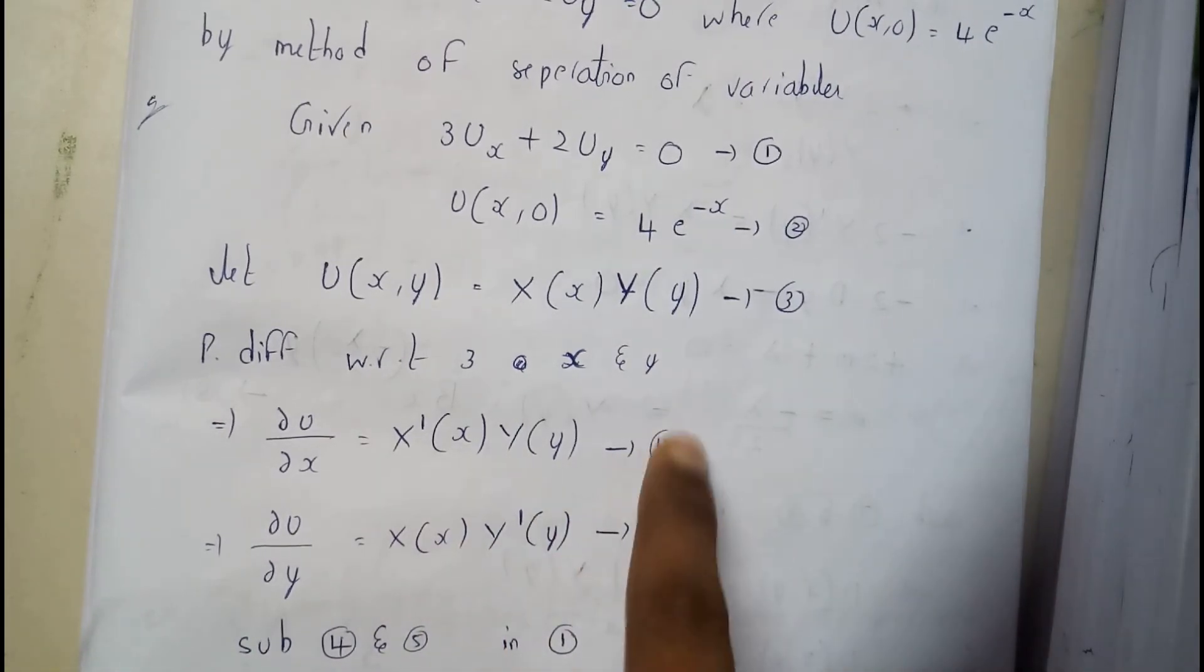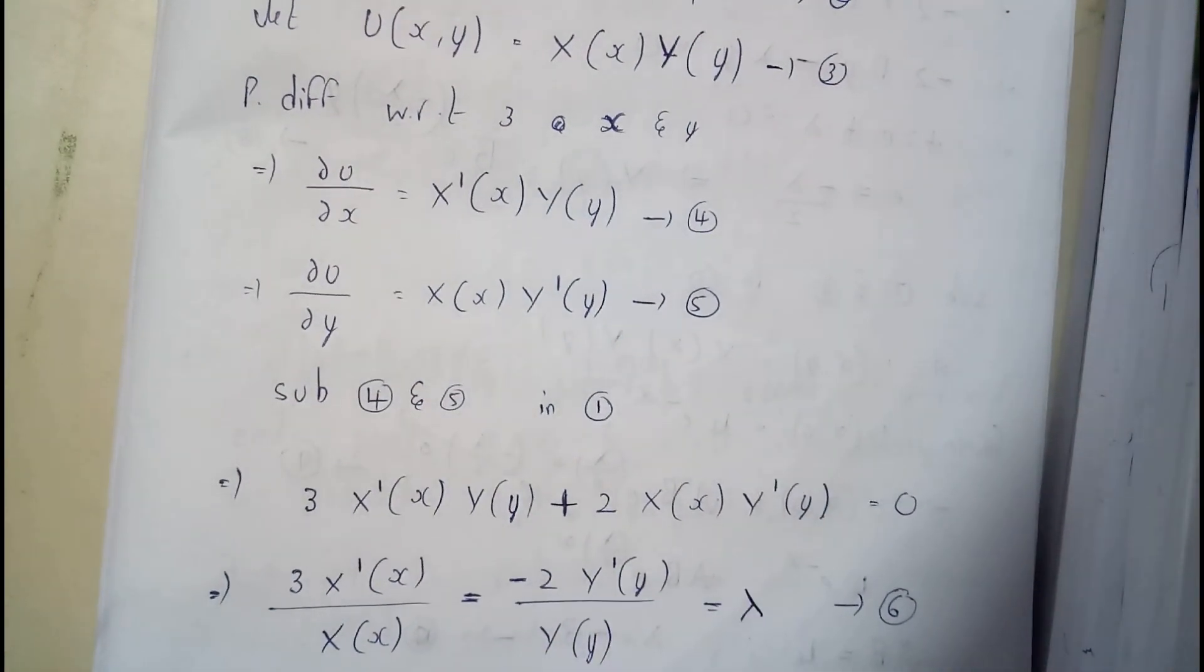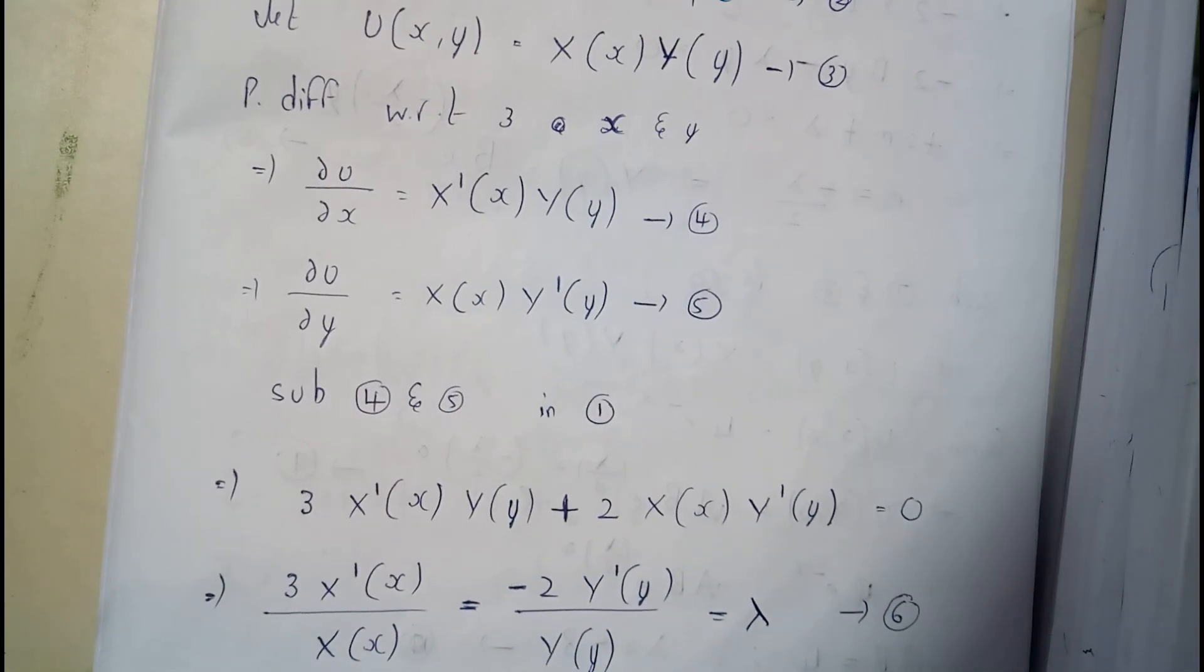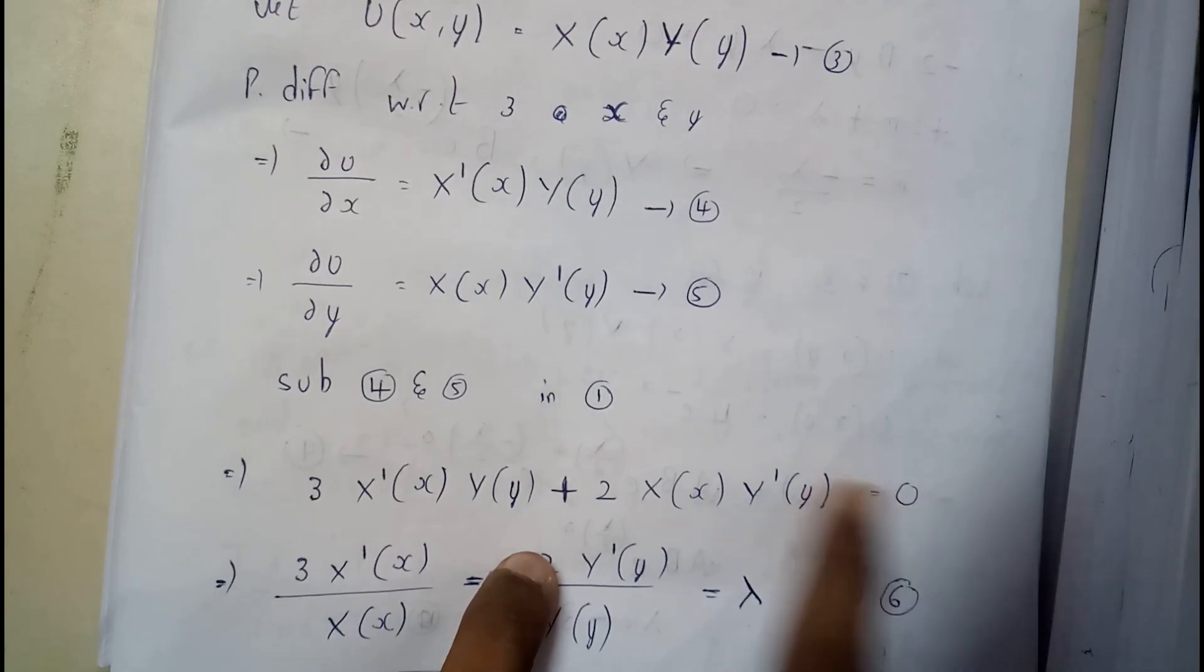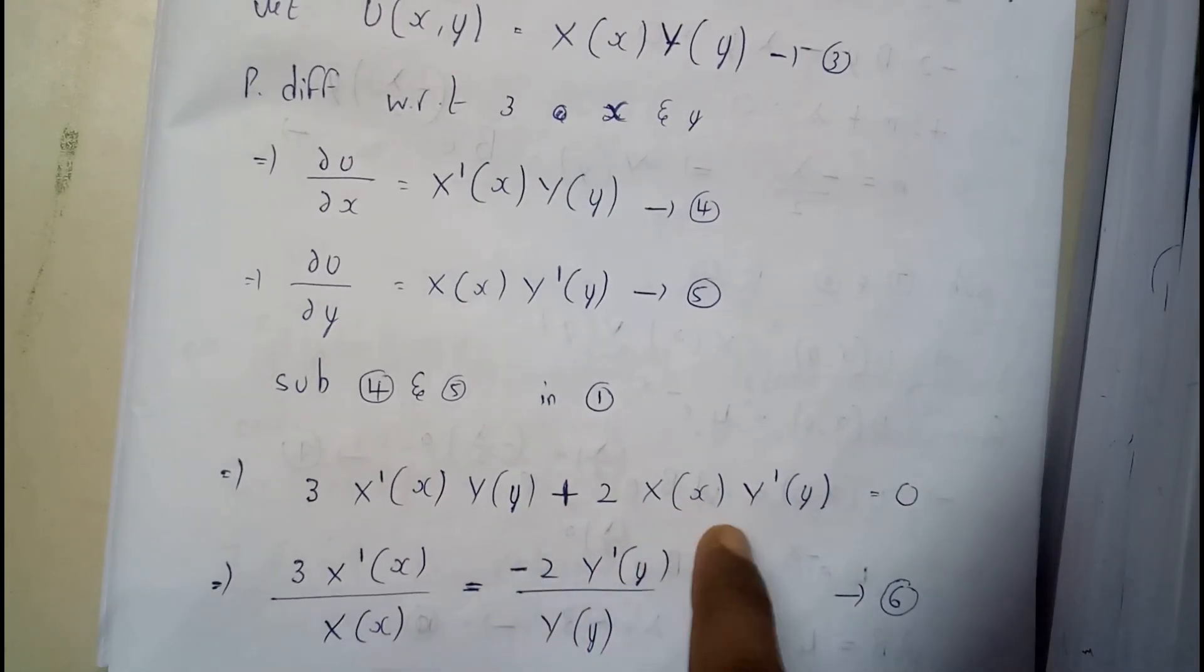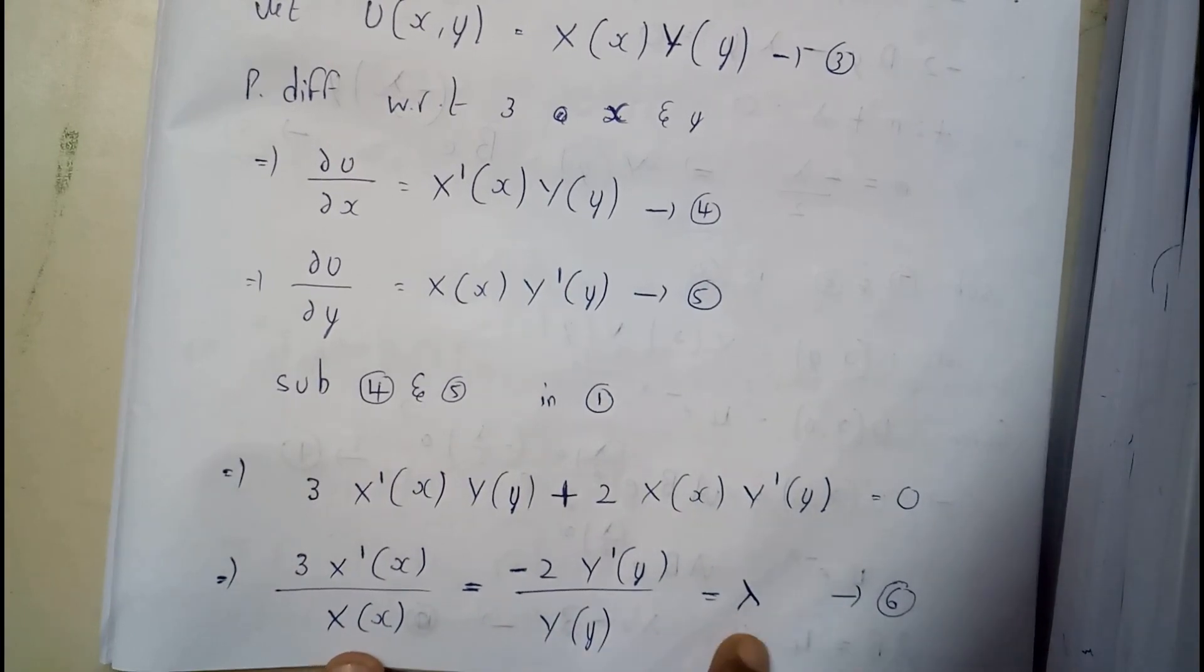Substituting equations 4 and 5 into the given question, we get this. Now we will try to separate all the x terms on one side and all the y terms on one side. Dividing by X(x) and Y(y), we will be getting this. I will be assuming it equals lambda.